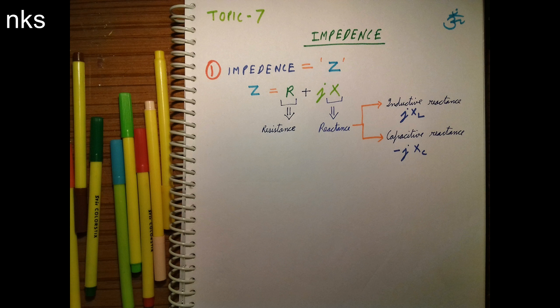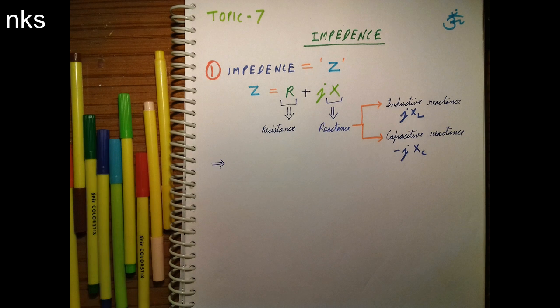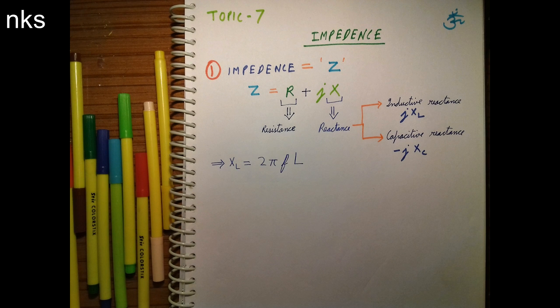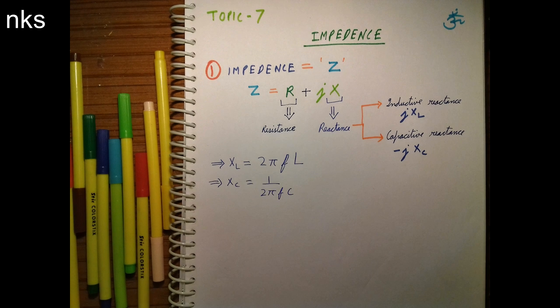Xl is calculated using the formula 2π into frequency into L, where L is the inductance value in Henrys. Xc is measured using the formula 1 divided by 2πFC, where F is frequency and C is capacitance in Farads.